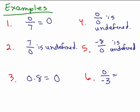And the last one, 0 divided by negative 3, that's going to be 0.